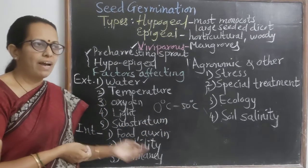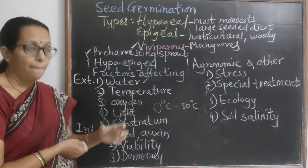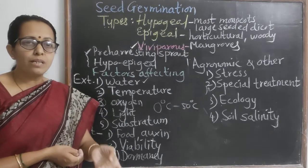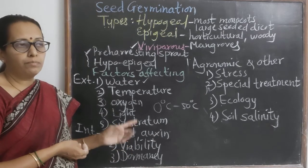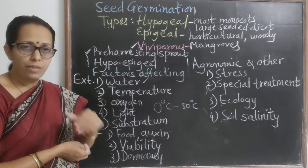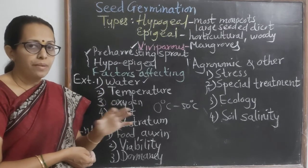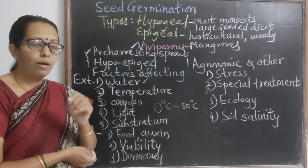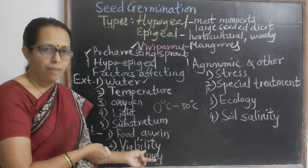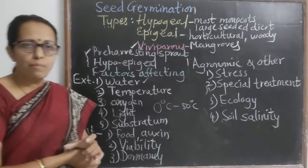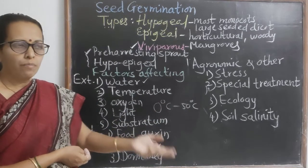Another very important internal factor is viability — the capacity of the seed to germinate. Whether seeds are capable of germination is critical. If favorable conditions are provided and seeds still do not germinate, there is obviously a problem with the embryo, so active embryos are required. Some seeds have short viability duration, while others remain viable for hundreds of years.